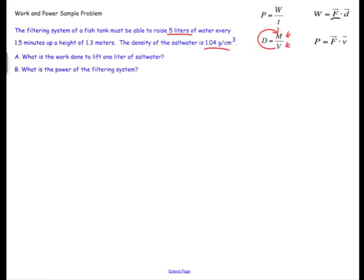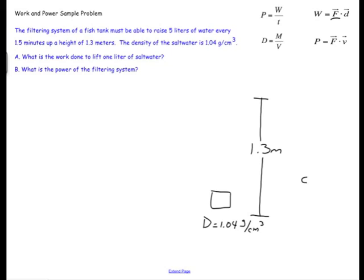The only other thing that we need to really watch for in this problem is our units. If I condense my information down I know that the height is 1.3 meters that this quantity of water needs to be lifted. And so here's this chunk of water here. I know the density is 1.04 grams per centimeter cubed. And I also know this information about being able to lift five liters per 1.5 minutes. So let's see what we need to do.